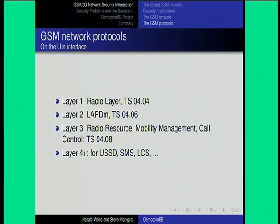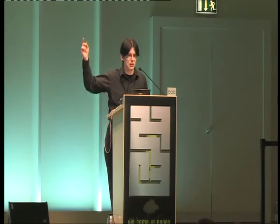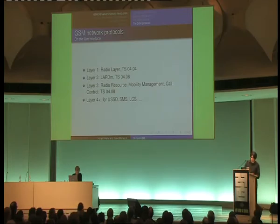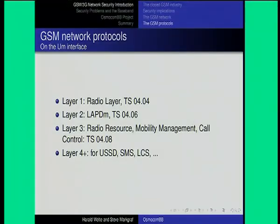What kind of protocols do we have? We have a protocol stack defined by several layers. First there's the radio layer, specified in GSM TS 04.04. On top of the radio layer we have LAPDm, which is an ISDN-derived layer two protocol. On layer three we have sub-layers called radio resource management, mobility management, and call control. Then there are additional layers for USSD, SMS, location services, and so on.